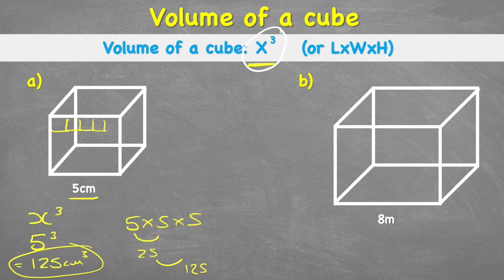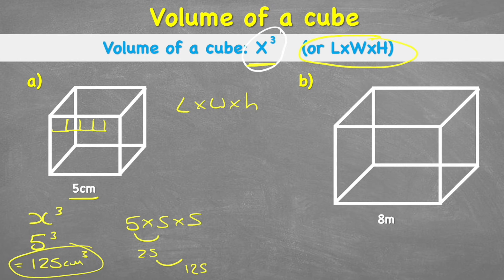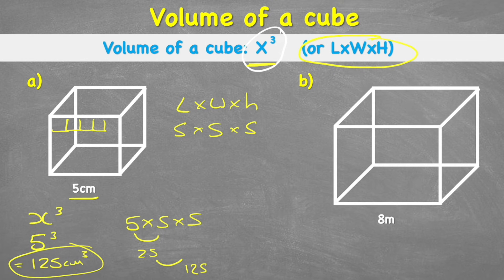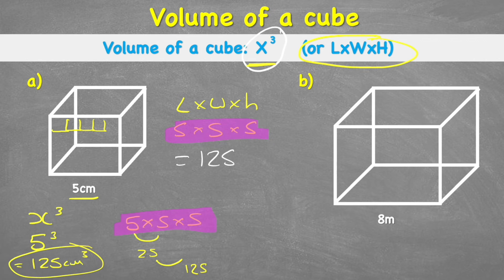Let's see if we get the same answer with the other formula of length times width times height. The length is five centimetres, the width is five centimetres, and the height is five centimetres. So what you can see is we've actually just got the same question as we had before. And five times five times five, as we said, is 125 centimetres cubed.